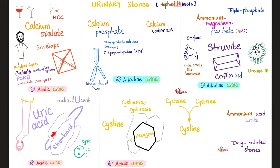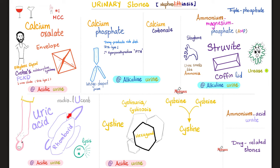Uric acid or urate stones precipitate in acidic urine. They are radiolucent — you cannot see them on x-ray or CT scan; use ultrasound instead. Risk factors include gout, hyperuricemia, hyperuricosuria, and any disease that causes cell rupture, because cells contain a nucleus made of purines and pyrimidines, and purine metabolism produces uric acid. This includes hemolysis, rhabdomyolysis, tumor lysis syndrome after chemotherapy, and myeloproliferative neoplasms. Tons of cells dying release uric acid into the blood and urine, producing uric acid kidney stones.